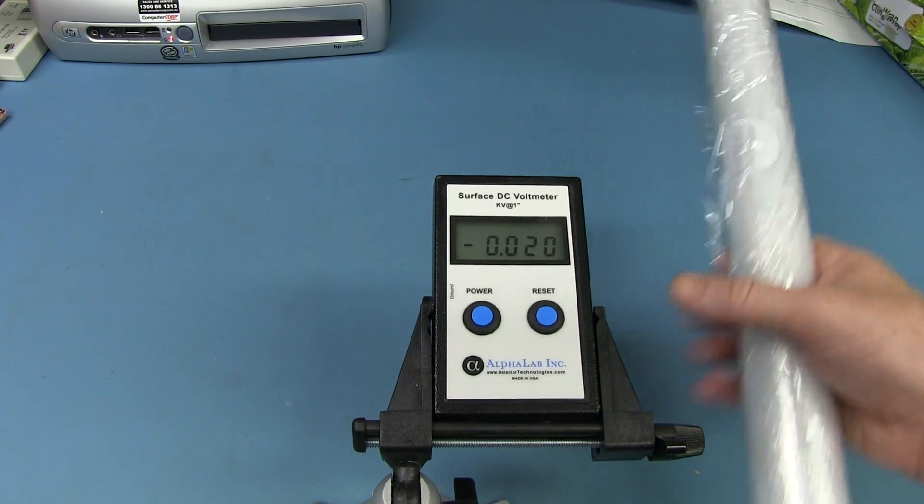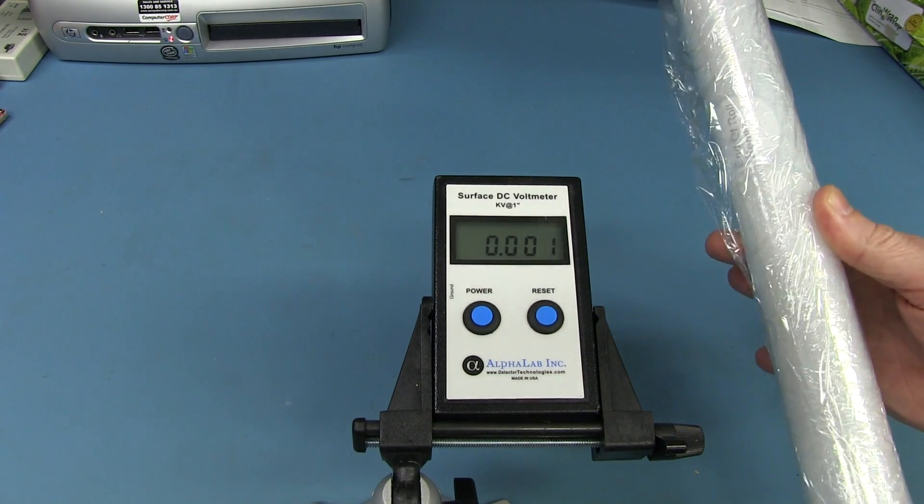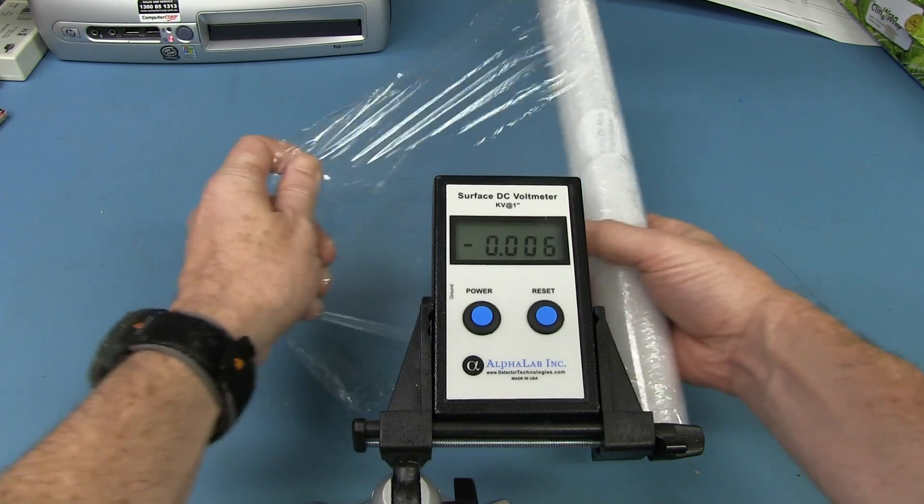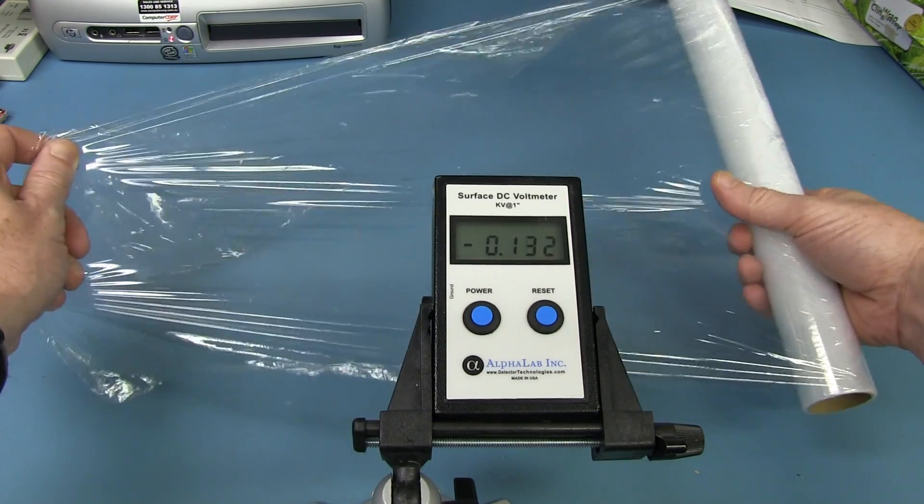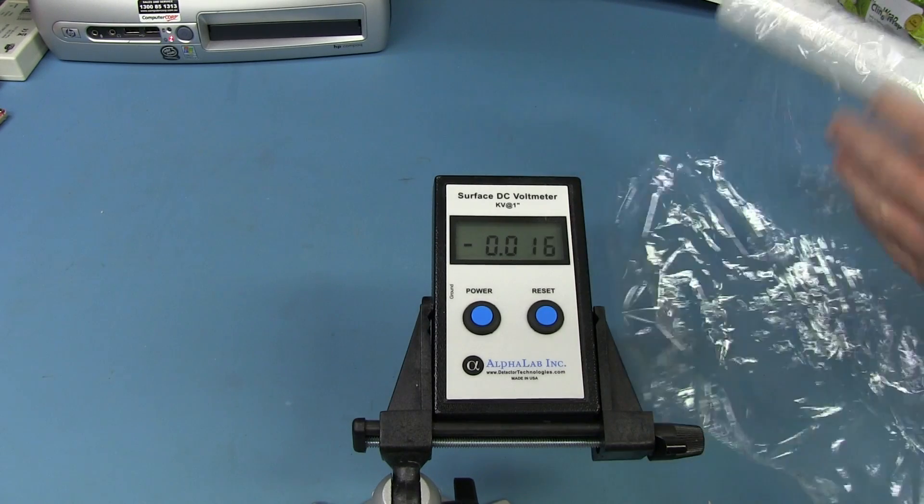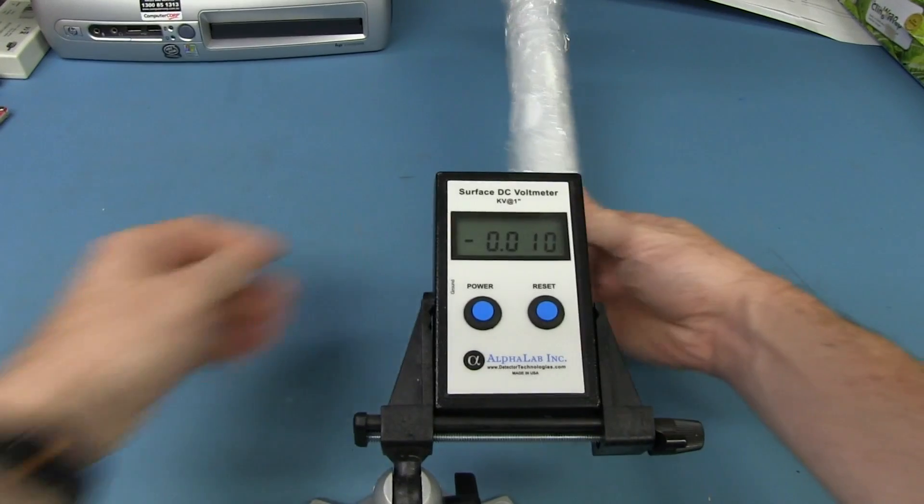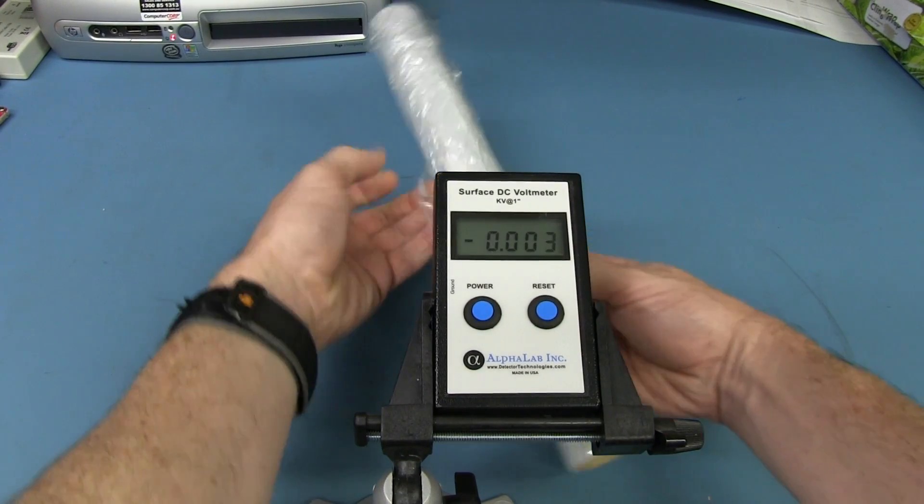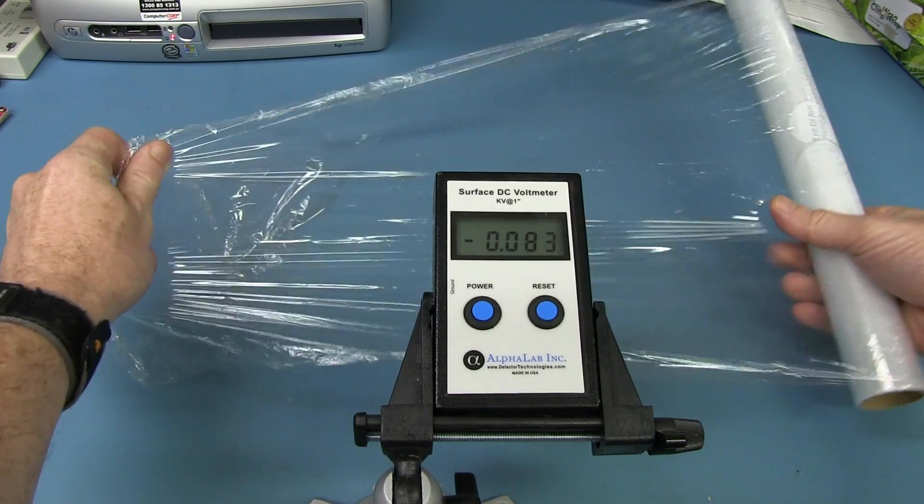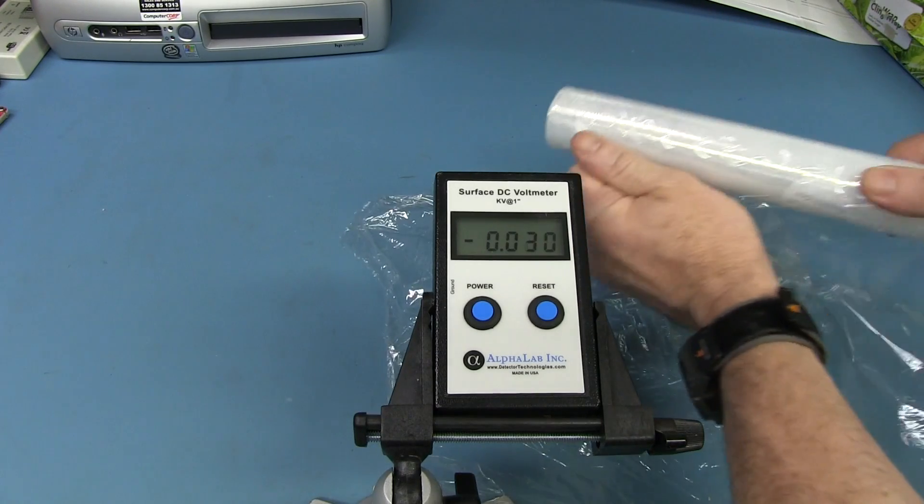Let's also test what happens if we roll it back onto this roll, and then unroll it again. Does it build up the same charge? Ta-da! No, it doesn't. Look at that. So if you want to minimize the charge on your cling wrap, just wrap it back up and then re-deploy it like that. And it's not a huge deal at all. It's not nearly the same as when you take the brand new stuff off the roll.